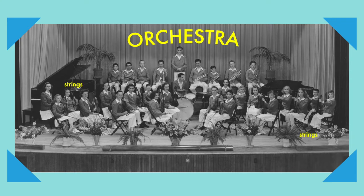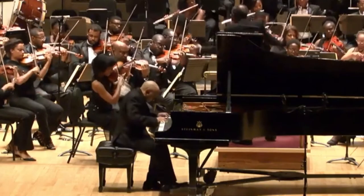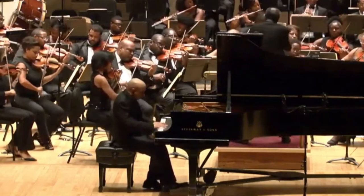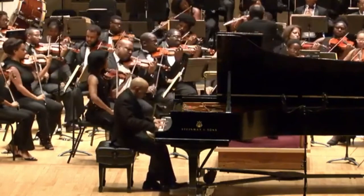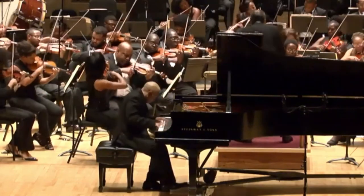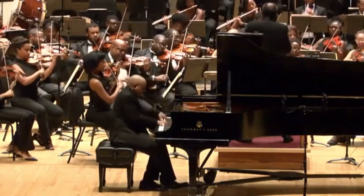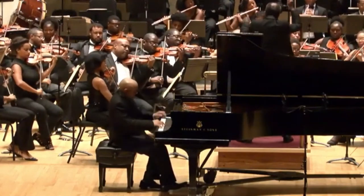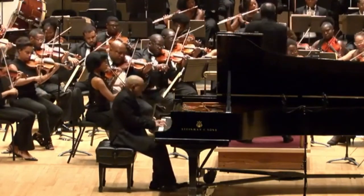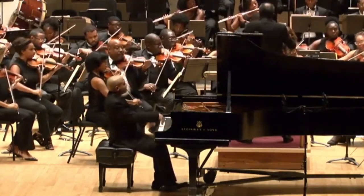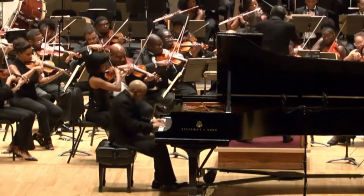And these four main sections are the string section, the woodwind section, the brass section, and the percussion section. There are amazing recordings of different orchestras all across the internet, so a great thing to do if you want to familiarize yourself with the different sections of the orchestra is to look up some of these different symphonies on YouTube.